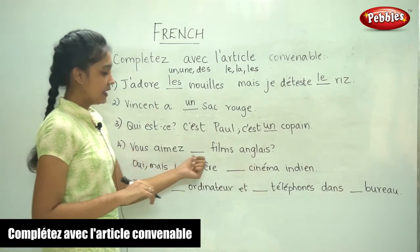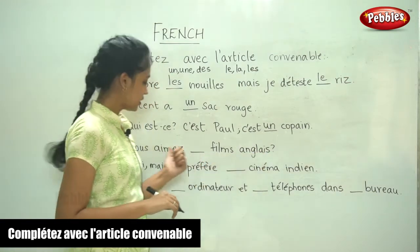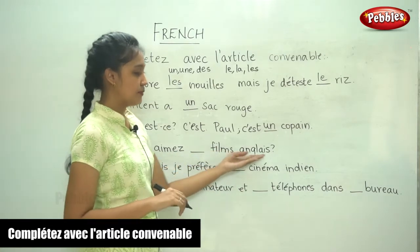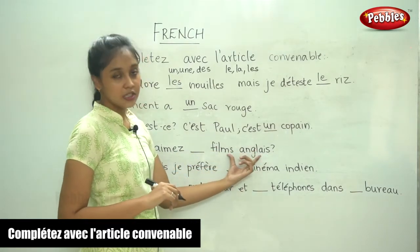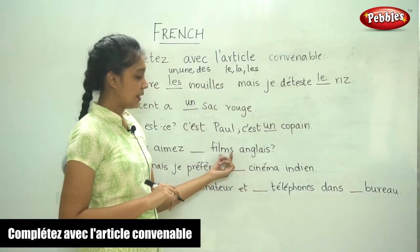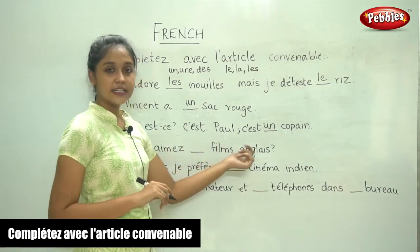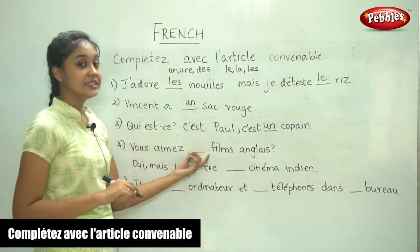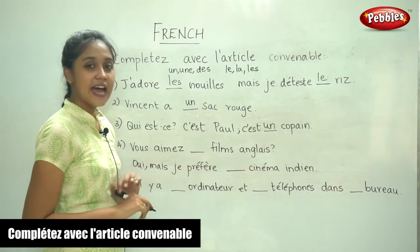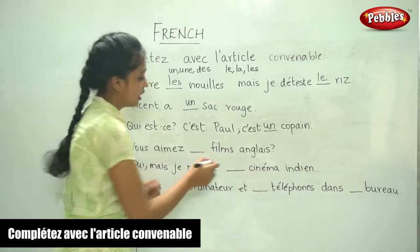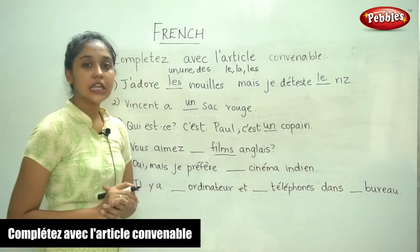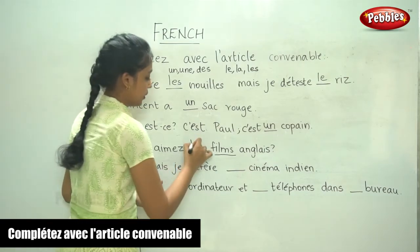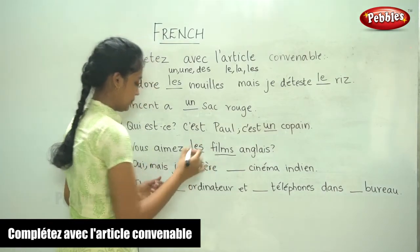'Vous aimez dash films anglais?' — you like dash English films. So here they are being particular — do you like the English films? So here we would write the definite article, and the noun is in the plural form, so we write 'les'.